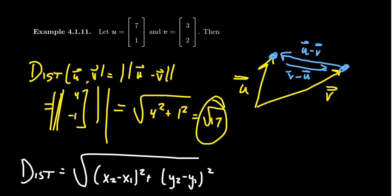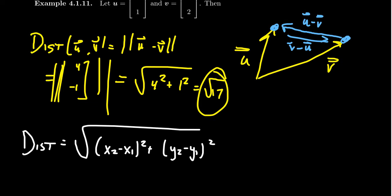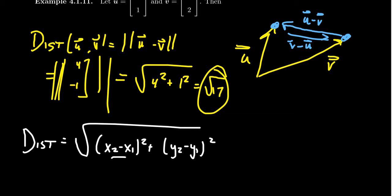Now, notice what we did here. For each of the coordinates, we subtracted the x coordinates, we subtracted the y coordinates, which x is just the first coordinate, y is just the second coordinate. So we took the difference of the coordinates, then we squared them, add them together inside of a square root.